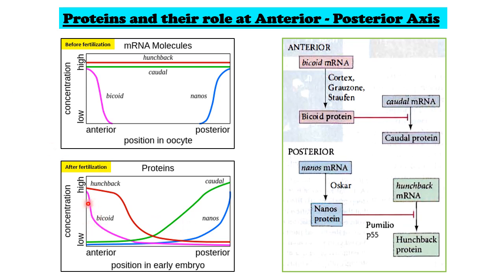For example, bicoid represses caudal. Where bicoid concentration is highest, the concentration of caudal is lowest, and where bicoid concentration is lowest, caudal concentration is highest. After fertilization, hunchback and bicoid form a concentration gradient from anterior to posterior, while caudal and nanos form a concentration gradient from posterior to anterior. Bicoid and nanos are both translational repressors. Bicoid protein binds to the 3' UTR of caudal mRNA and prevents its translation into caudal protein. So in the anterior end, where bicoid is highest, it suppresses caudal translation, and as bicoid concentration decreases, caudal concentration increases.